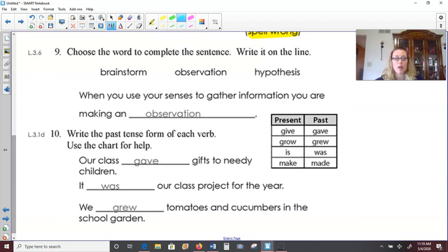Number nine. Choose the word to complete the sentence. Write it on the line. Brainstorm observation and hypothesis. Hypothesis sounds like a lot of science words. When you use your senses to gather information, you are making an observation. And number 10. Write the past tense form of each verb. Use the chart for help. So we could look at the past tense verbs over there. Gave, grew, was, and made. Our class gave gifts to needy children. It was our class project for the year. Remember past tense. We grew tomatoes and cucumbers in the school garden. All right, guys. Nice work. Lesson 132 is up next.